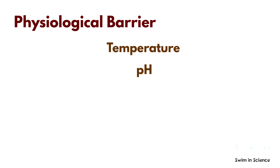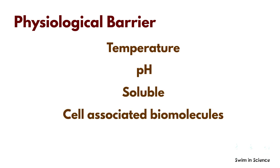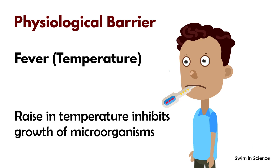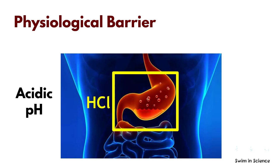Physiological barriers include temperature, pH, and various soluble and cell-associated biomolecules. We often get a fever — this is one of the body's reactions to infection. A rise in temperature inhibits the growth of many organisms. Our stomach contains HCl, which helps in digestion. It is an acid, and most organisms cannot survive in acidic pH.